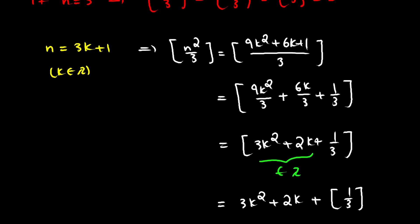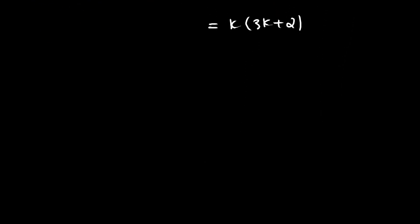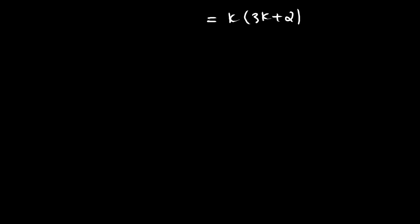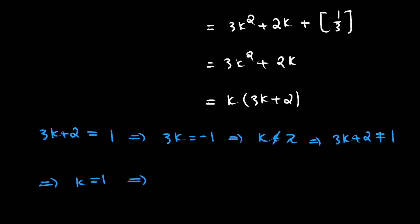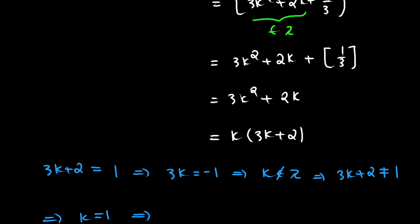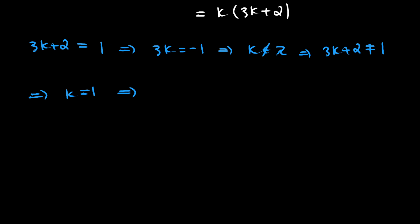For k(3k + 2) to be prime, one of the two factors must equal 1. Note that 3k + 2 cannot equal 1, because that would require 3k = -1, meaning k is not an integer. Therefore k must equal 1, which gives n = 3(1) + 1 = 4.